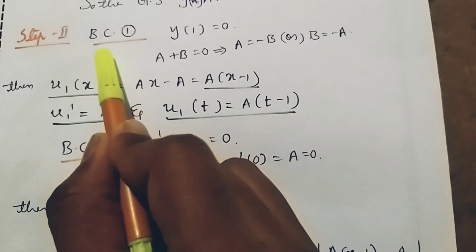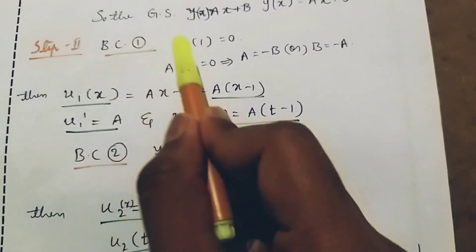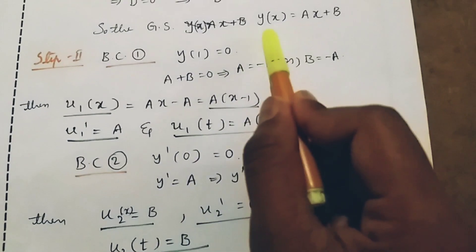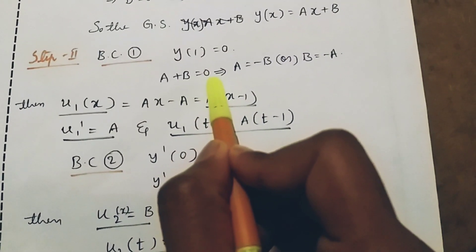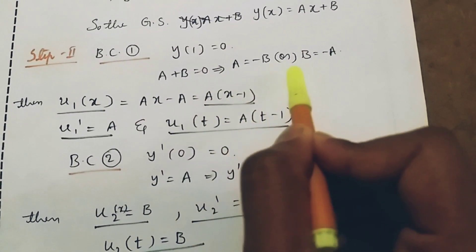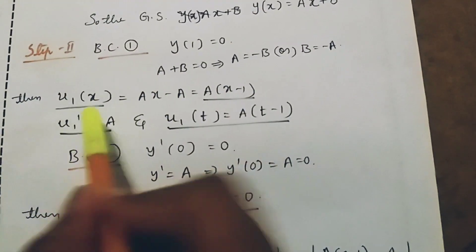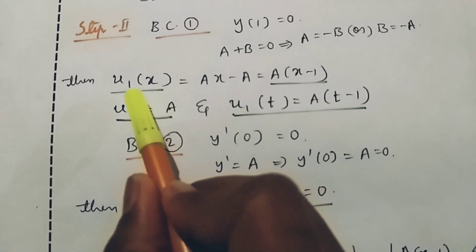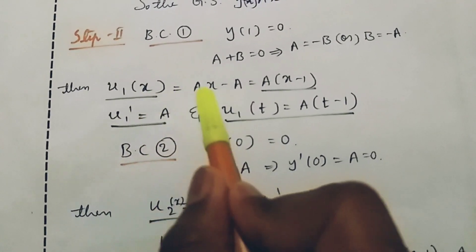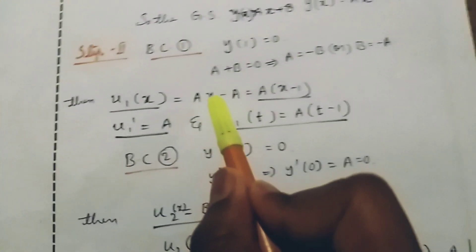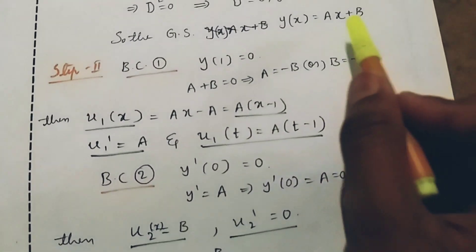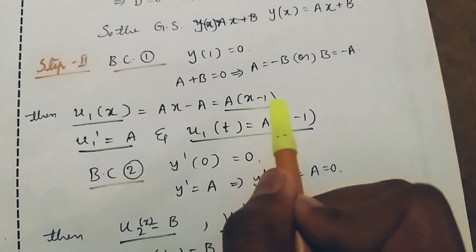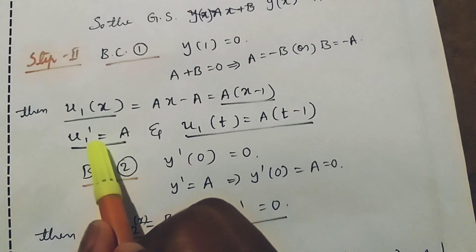Step two: by applying boundary condition one, y of one equal to zero. Substituting x equal to one gives a plus b equal to zero, which implies a equal to minus b, or b equal to minus a. Then substituting b equal to minus a gives y₁ of x equal to a(x minus 1).